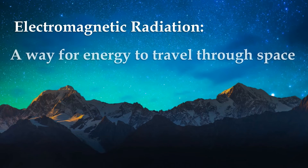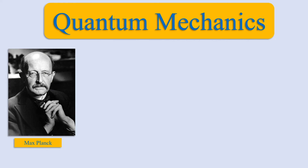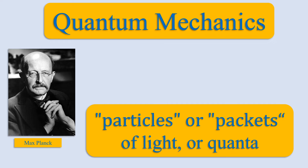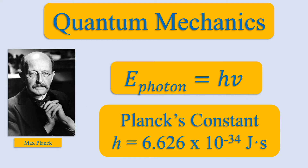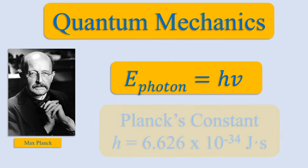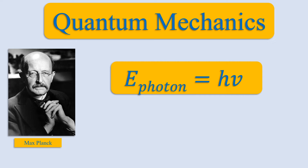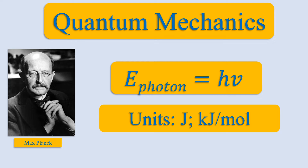Electromagnetic radiation is a way for energy to travel through space. As I explained in an earlier video on Planck's conclusions of blackbody radiation, electromagnetic radiation travels in particles or packets of light called quanta. These particles are also called photons and carry an energy of h-nu, where h is called Planck's constant. In this lecture, let's practice using this equation to find the energy of a single photon in joules, and the energy of a mole of photons in kilojoules per mole.